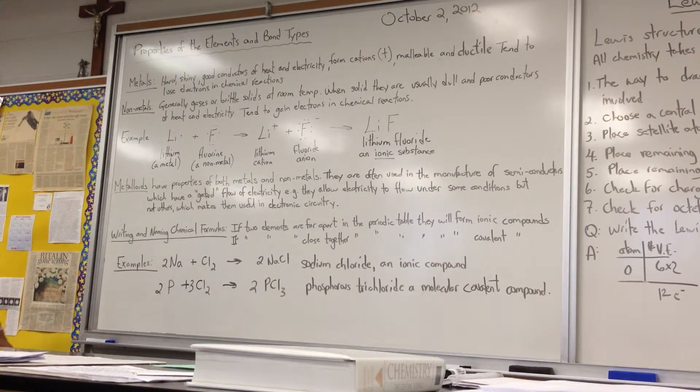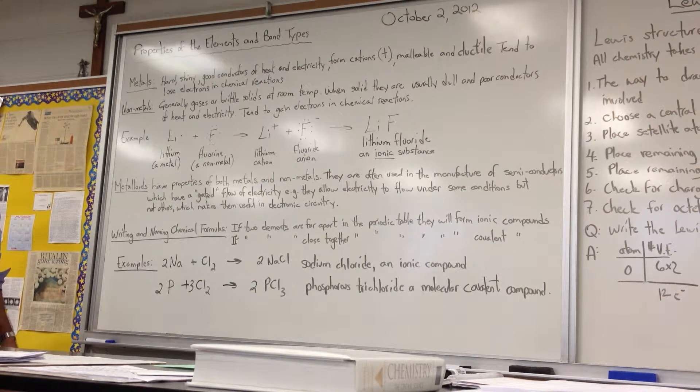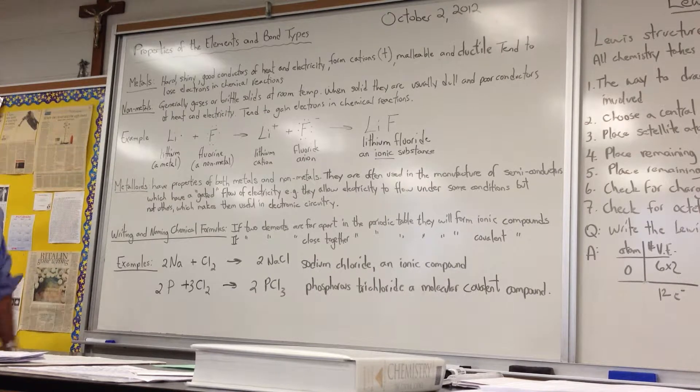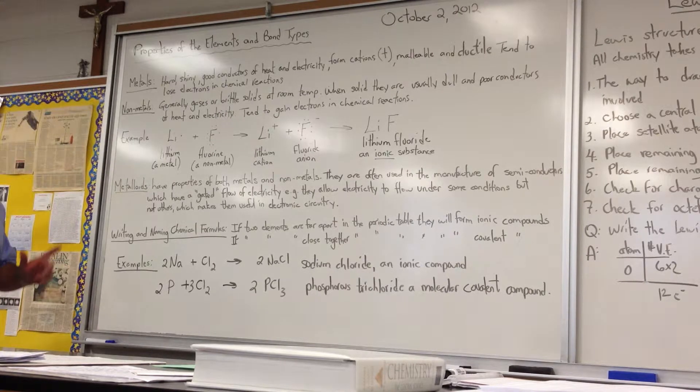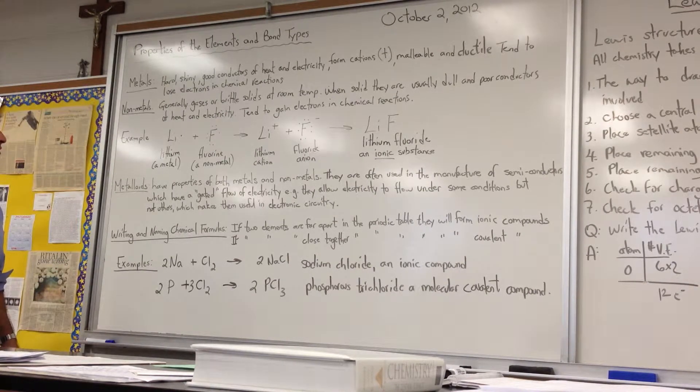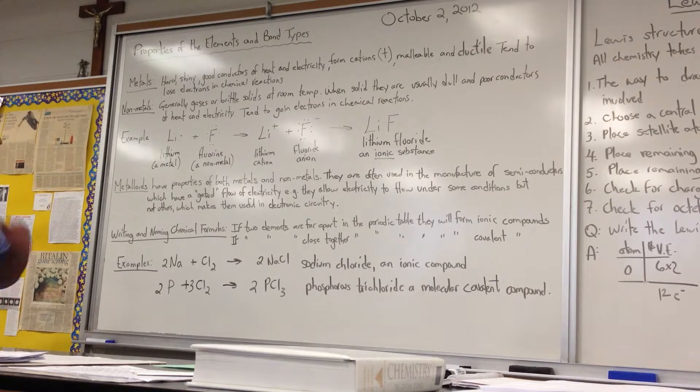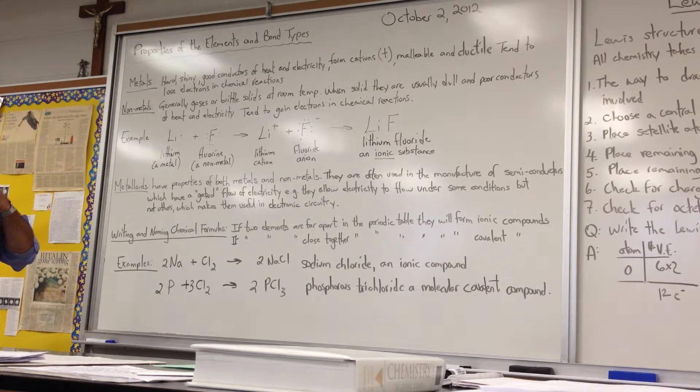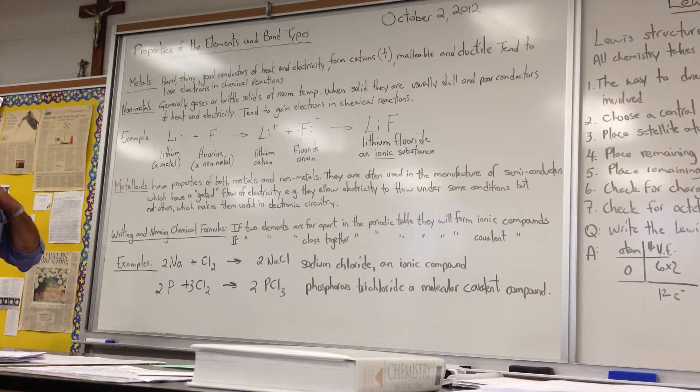Okay, we're looking at the properties of the elements and bond types. We're going to look at two bond types today: the ionic bond and the covalent bond, because they help us to understand most of the elements and what they do.